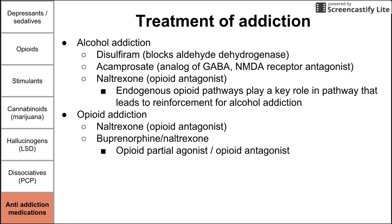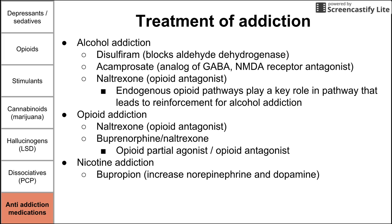For nicotine addiction, we have bupropion, which increases norepinephrine and dopamine concentrations and is also an antidepressant, helping people get over nicotine addiction. We also have varenicline, which is a partial nicotinic agonist — it has the effect of nicotine and acts as a substitute for nicotine from cigarettes in people trying to break that addiction.